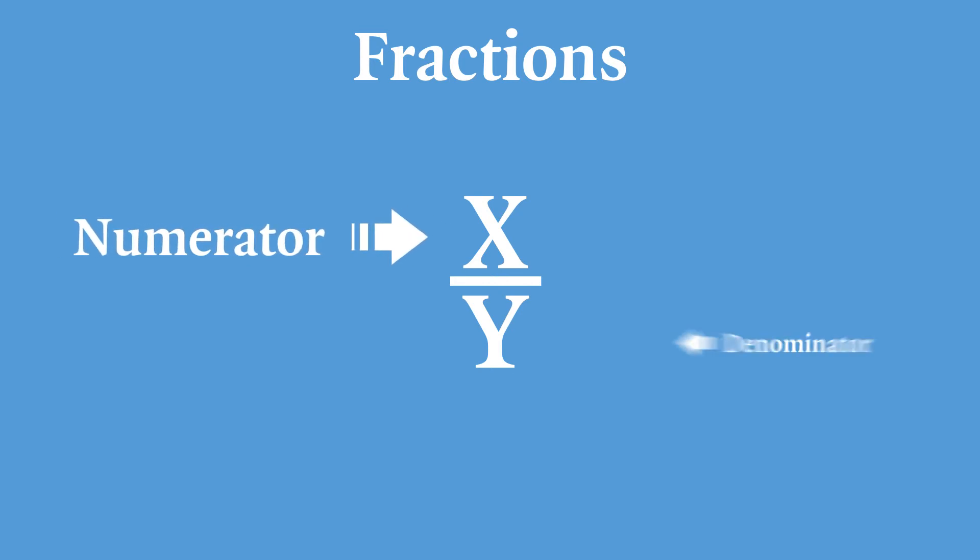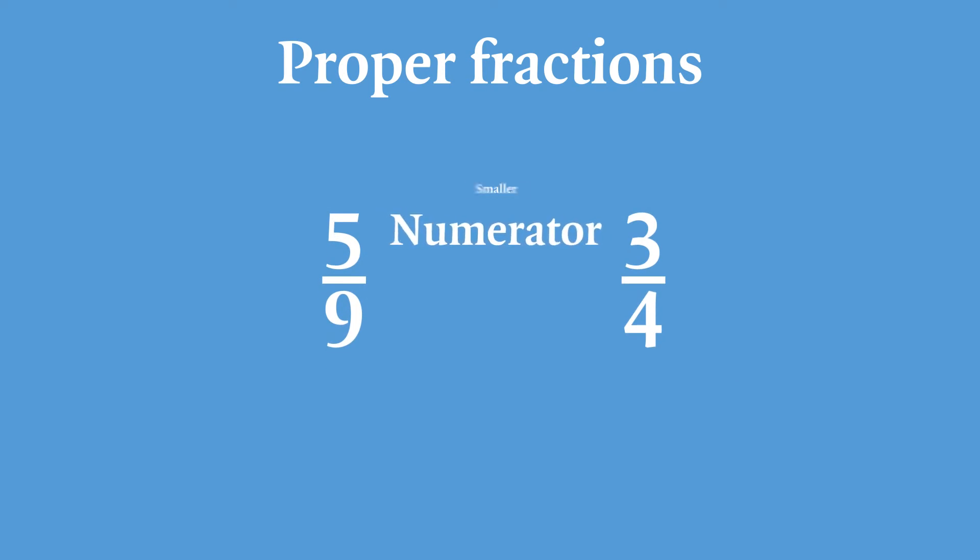Fractions are numbers that are written in the form of x over y. X and y being different numbers. X is the numerator and y is the denominator. In order for it to be a fraction, the denominator cannot be zero. Proper fractions are fractions where the numerator is smaller than the denominator, like 5 over 9 or 3 quarters.